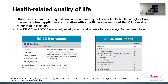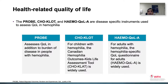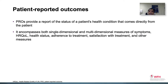Hemophilia-related quality of life measurements are usually questionnaires that aim to quantify a patient's health in a global way. However, it is best applied in combination with specific assessments of the ICF domains rather than in isolation. Generic instruments like the EQ-5D and the SF-36 are useful, and disease-specific tools like the PROBE, CHO-KLAT, and the HemoQoL-A have been used to assess quality of life in hemophilia. Patient-reported outcomes include both single-dimensional and multi-dimensional measures of symptoms, health-related quality of life, health status, adherence to treatment, and satisfaction with treatment. They are often cumulative outcome measures and may not provide adequate insight into the problems that give rise to a diminished quality of life score, and may have limited value in targeting interventions.